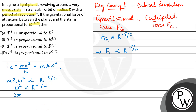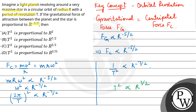So, omega squared equals (2π/T) squared, which is directly proportional to R raised to the power minus 7 by 2. That means 1 upon T square is directly proportional to R raised to the power minus 7 by 2, and by inverting both sides, T square is directly proportional to R raised to the power 7 by 2. So our final answer is option B.